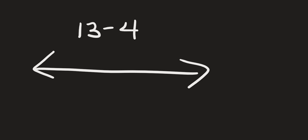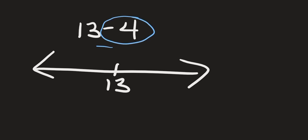Next let's say we have 13 minus 4. When we draw a number line, we're going to start at 13. But we know that we have minus 4, which means we have to go 4 units to the left — 12, 11, 10, 9. 13 minus 4 gives us 9.